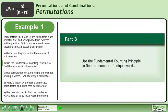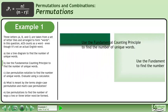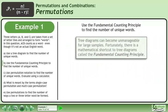In part B, use the fundamental counting principle to find the number of unique words. Tree diagrams can become unmanageable for large samples. Fortunately, there is a mathematical shortcut to tree diagrams called the fundamental counting principle.